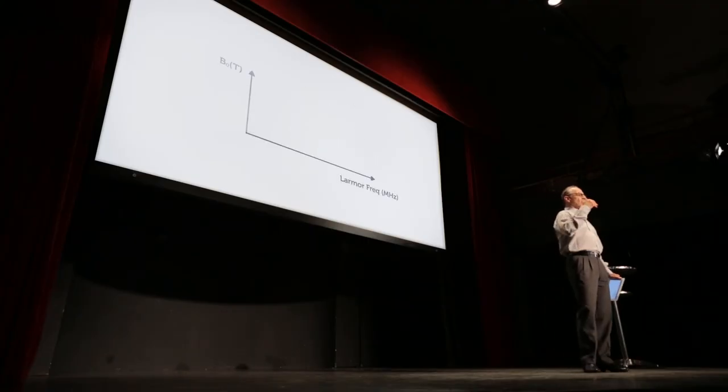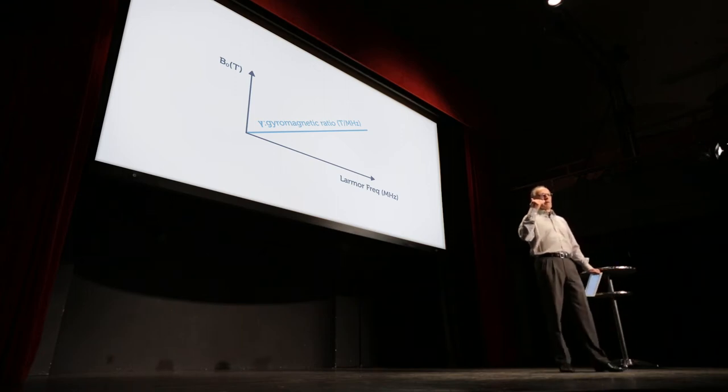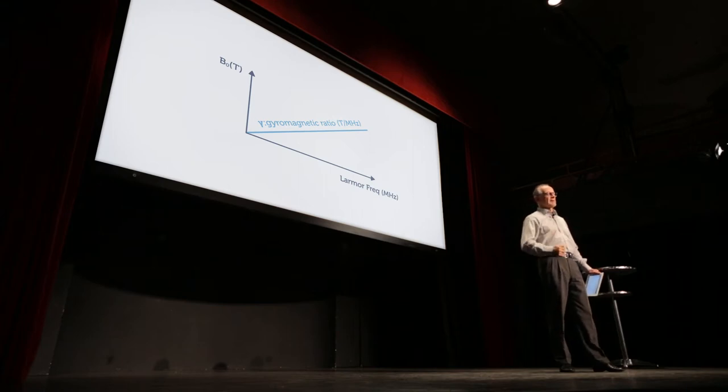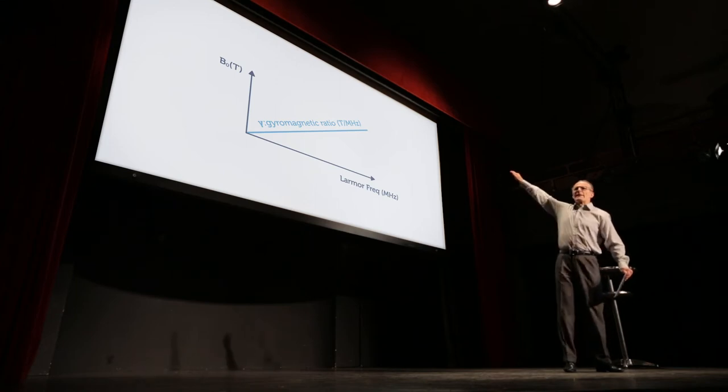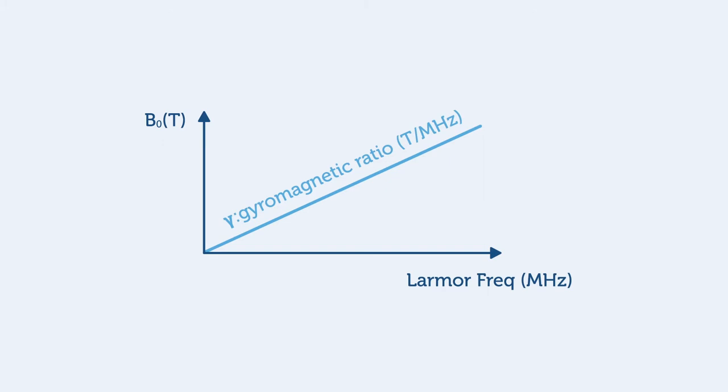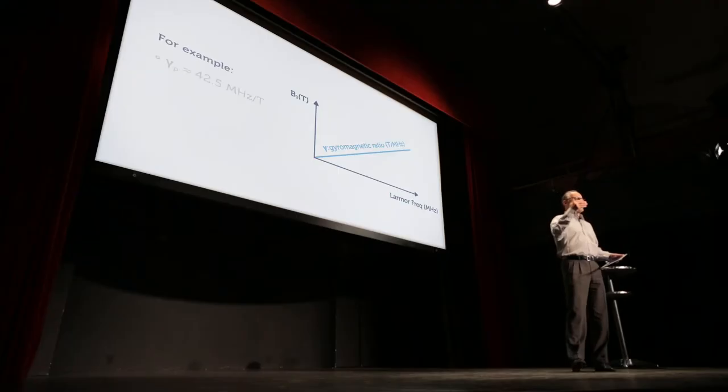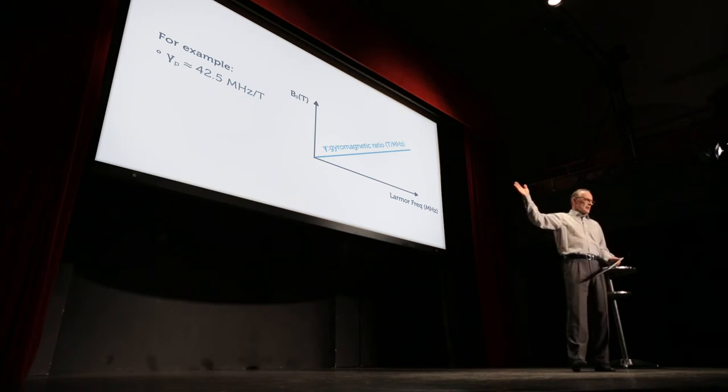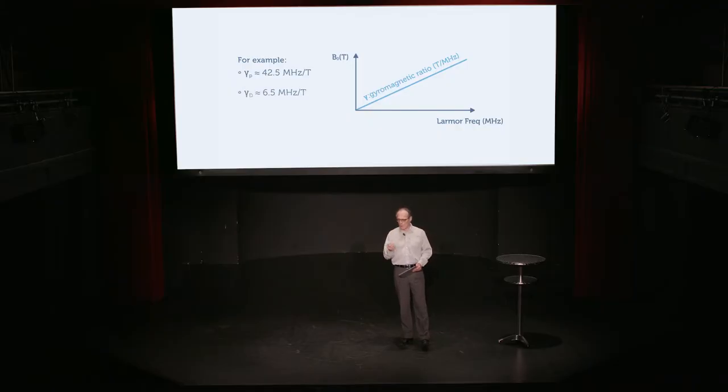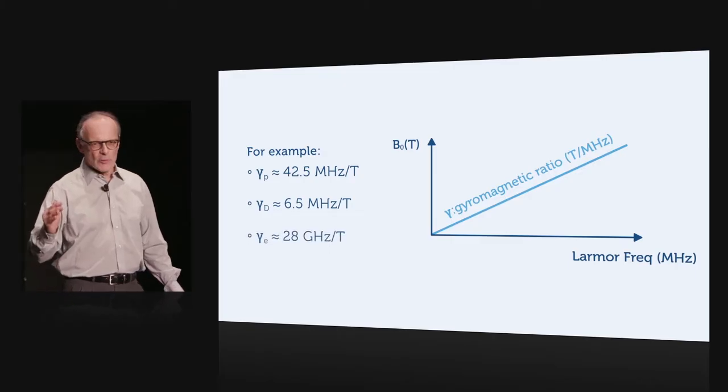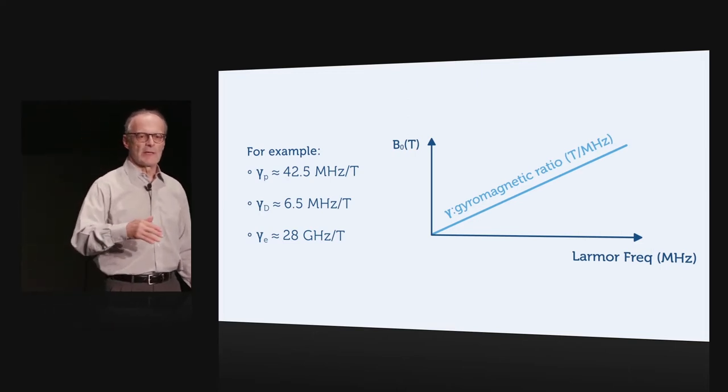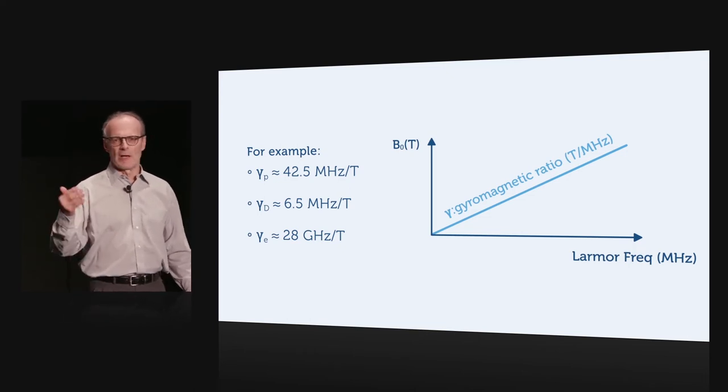As we mentioned, the Larmor frequency depends linearly on the external magnetic field B0, the flux density. The slope of this line is called the gyromagnetic ratio. Here are a few values of the gyromagnetic ratio for some typical nuclei. The gyromagnetic ratio of the proton, or a hydrogen nucleus, is about 42.5 megahertz per tesla. Gyromagnetic ratio of a deuteron, or a proton combined with a neutron, is about six times lower, about 6.5 megahertz per tesla. On the other hand, the gyromagnetic ratio of electrons is about three orders of magnitude higher, meaning that we can measure lower fields with the same frequency range using ESR.